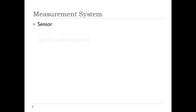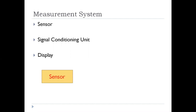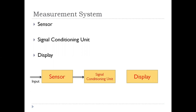What is a measurement system? A system used for making measurements is called a measurement system. It has three main components: a sensor, a signal conditioning unit, and a display. A sensor is a device used to measure any physical parameter; it is the base of the measurement system, and it usually produces an electrical output signal in response to the quantity being measured. The signal conditioning unit processes the signal so that the display can recognize it, and finally the display shows the measured value.